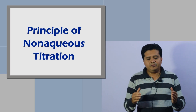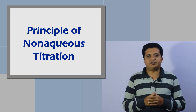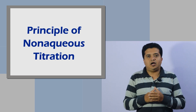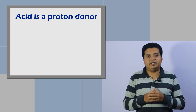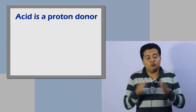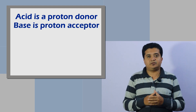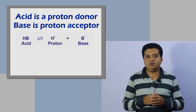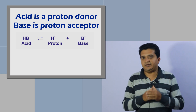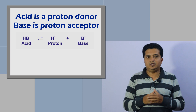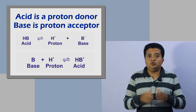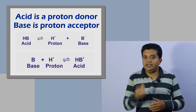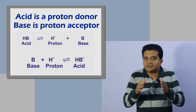Now let's learn about the principle behind non-aqueous acid-base titrations. The Brønsted-Lowry theory is used in non-aqueous titration. According to this theory, an acid is a proton donor — a substance which tends to dissociate to yield a proton — and a base is a proton acceptor — a substance which tends to combine with a proton. An acid dissociates into a proton together with its conjugate base. For every base there is a conjugate acid, and every acid has its conjugate base.